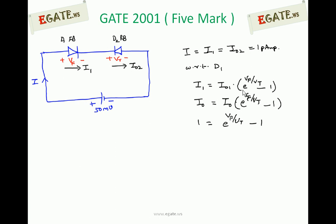I1 equals I01 times E to the power Vf by Vt, eta equals 1, minus 1. So I1 equals I0 times E to the power Vf by Vt minus 1. I0 cancels. 1 equals E to the power Vf by Vt minus 1. If you simplify, E to the power Vf by Vt is 2. From that we can write Vf equals Vt natural log of 2.